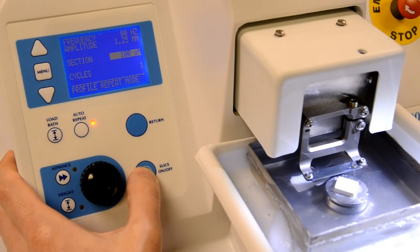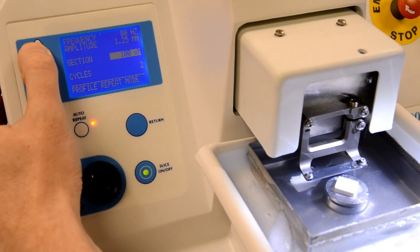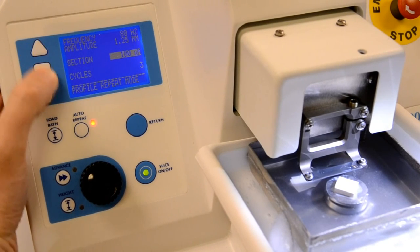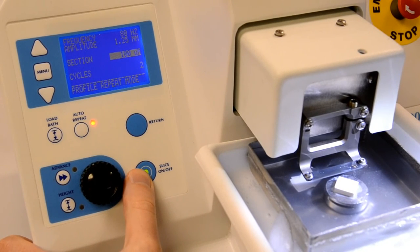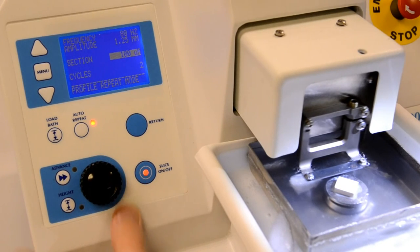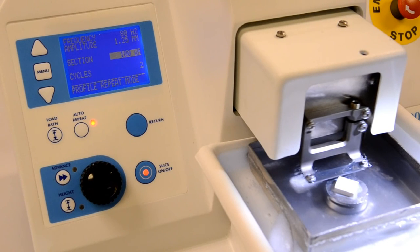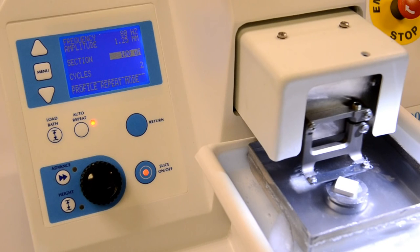To enable this, press the auto-repeat key twice and the display will change to the profile repeat mode where you are invited to input the number of cuts to be taken. Use the arrow keys to input the number of cutting cycles. Once you have set the number required, press the slice on-off key and the instrument will cut the number of slices required using the same speed profile that you used originally.